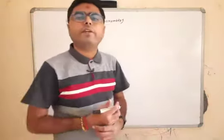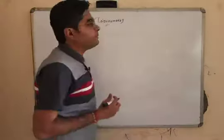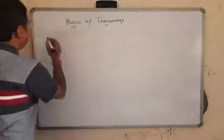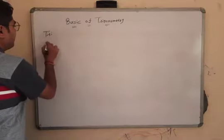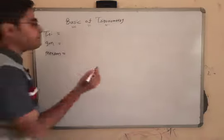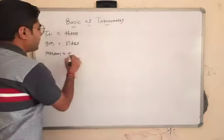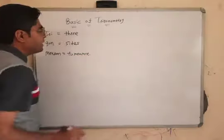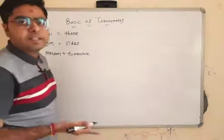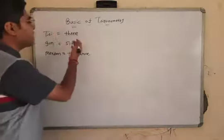Hi, this is Jai Sir. We are going to learn the basics of trigonometry. Trigonometry is an English word which is a combination of three Greek words: 'tri', 'gone', and 'matron'. Tri means three, gone means sides, and matron means to measure. It means that using trigonometry we find the sides and the angles of a triangle — we can measure the sides and the angles.